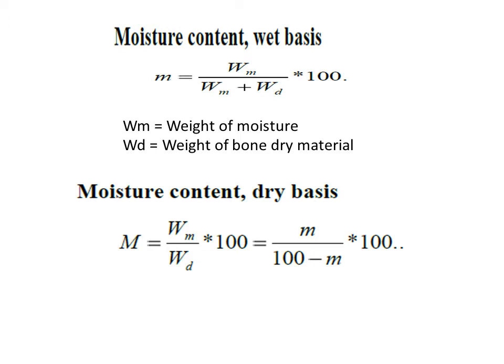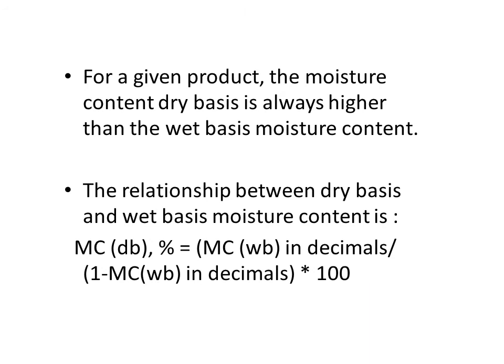For moisture content on a dry basis, the formula is: M = (WM / WD) × 100, where the notations remain the same. There is also a relationship between the dry basis moisture content and the wet basis moisture content.